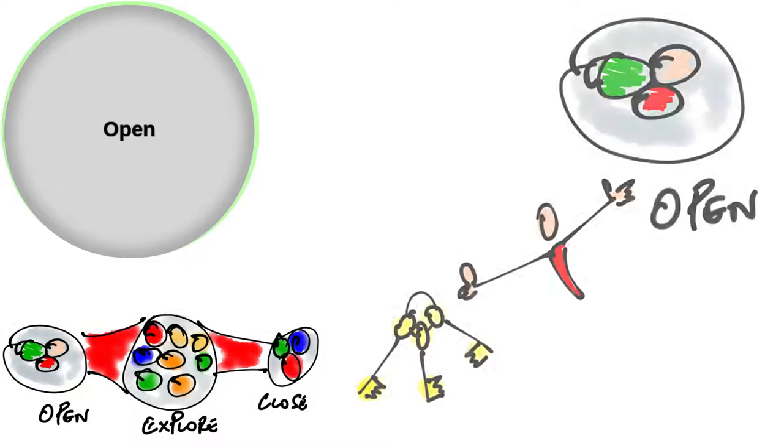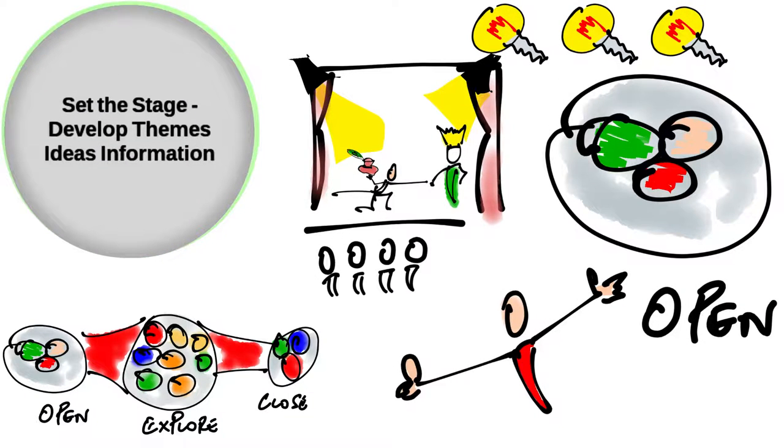Game-storming is a three-stage process. You open by setting the stage and developing themes, ideas and information,